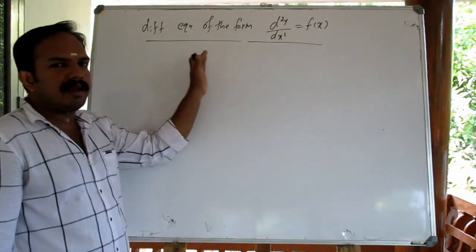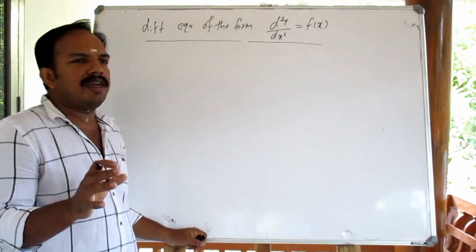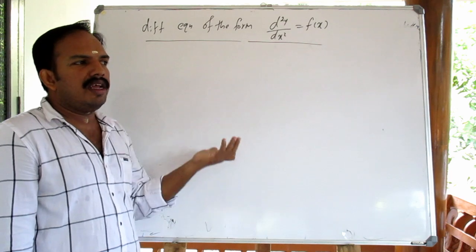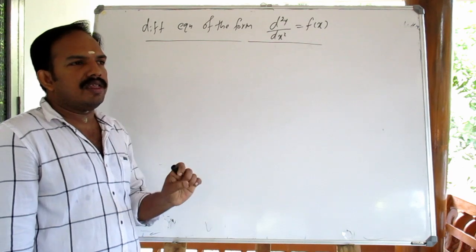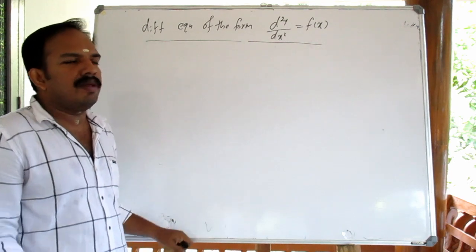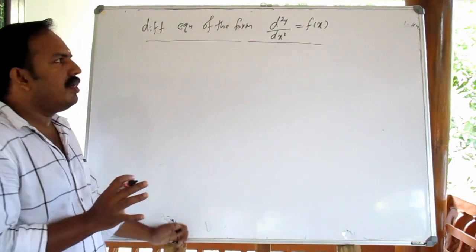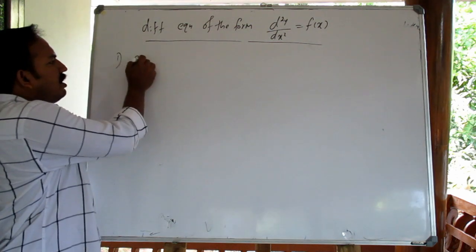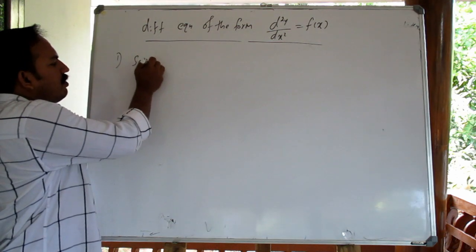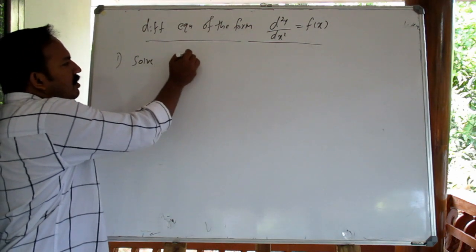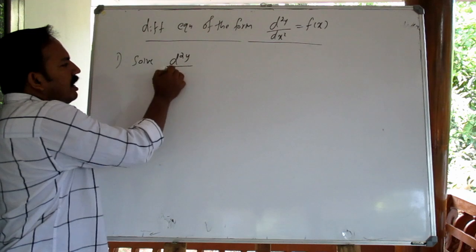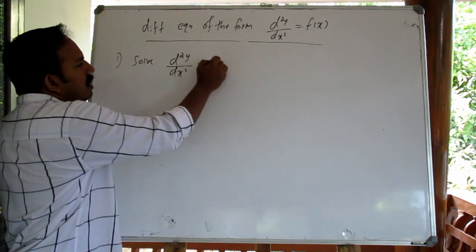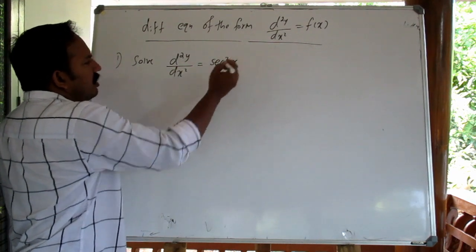First, I will say that these formulas are the same as sin x. These formulas are the same for you. Now, I will ask you this question: solve d squared y by dx squared equal to cos squared x.